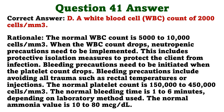The nurse reviews the arterial blood gas results of a client and notes a pH of 7.30, pCO2 of 52 mmHg, and HCO3 of 22 mEq/L. Which interpretation does the nurse correctly make about these results? A. Metabolic acidosis. B. Metabolic alkalosis. C. Respiratory acidosis. D. Respiratory alkalosis. The correct answer is C: respiratory acidosis. Normal pH is 7.35 to 7.45. In a respiratory condition, an opposite effect will be seen between the pH and the pCO2. In this situation, the pH is low and the pCO2 is increased. In an acidotic condition, the pH is decreased. Therefore, the values identified indicate respiratory acidosis.